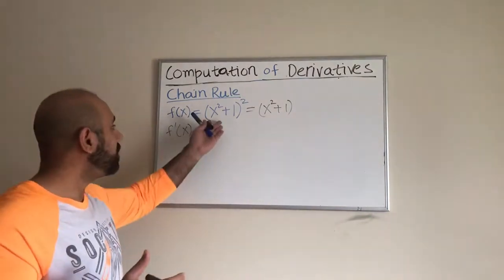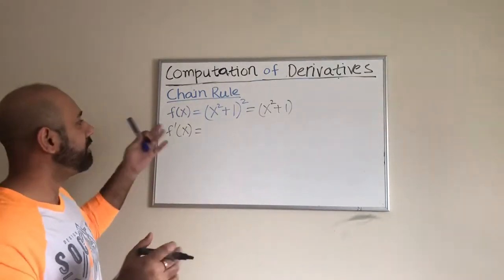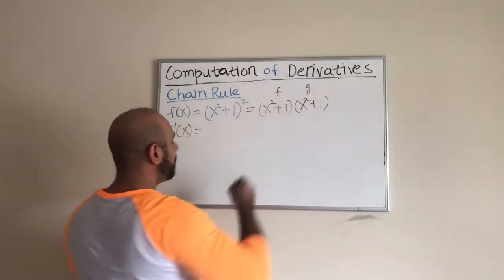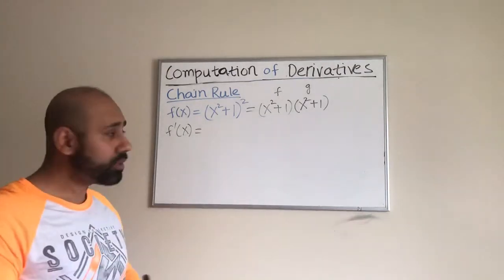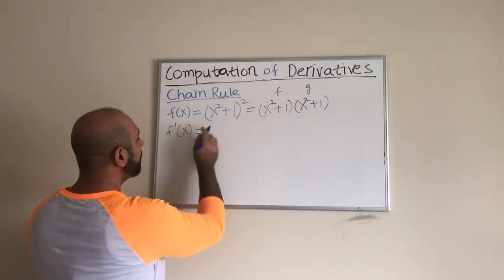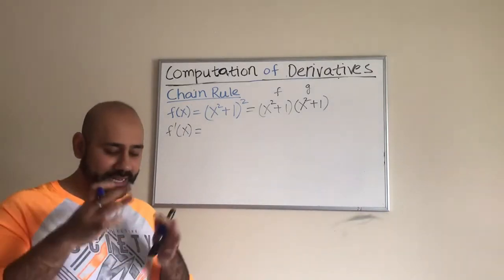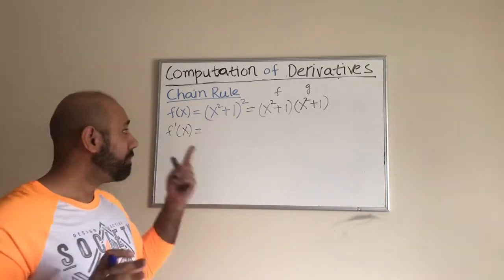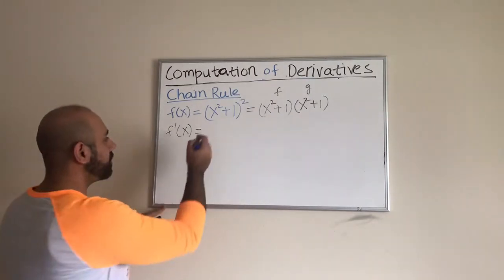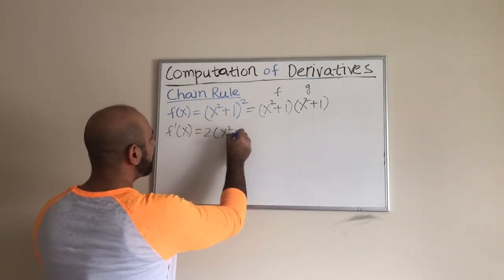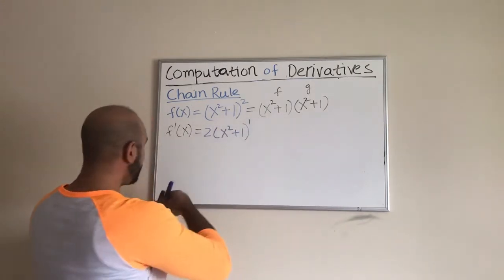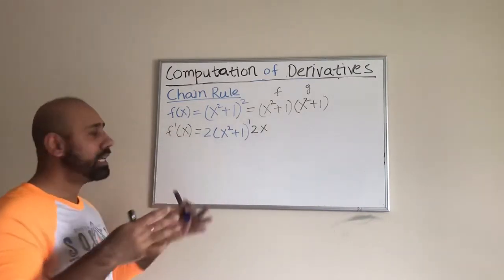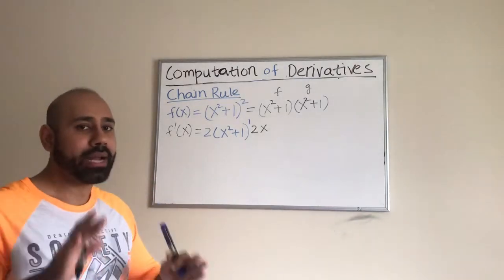Without knowing the chain rule, one would write it out as the product of two factors and then use the product rule on this — this is f and this is g. Once we use the product rule on this, finally this is what we get as the derivative. I'm writing it in a certain form so we can see the pattern. It's going to look like 2 times (x² + 1) raised to the power 1, times 2x. If I write the final simplified answer, it would be 4x(x² + 1).